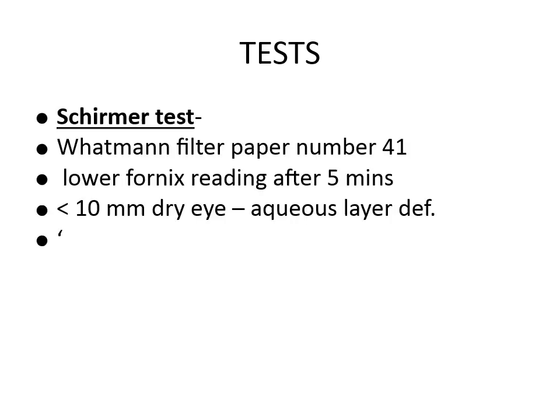The tests used to evaluate dry eye are very important. First is Schirmer's test. You take a Whatman filter paper number 41 — around 5 mm wide and 35 mm long — and insert it into the lower fornix, then wait for 5 minutes. After 5 minutes, you look at the reading. If the reading is less than 10 mm, it is a case of dry eye, indicating a deficiency of the aqueous layer.